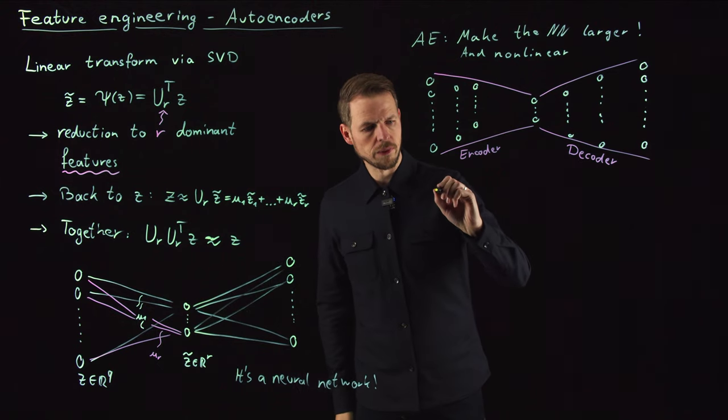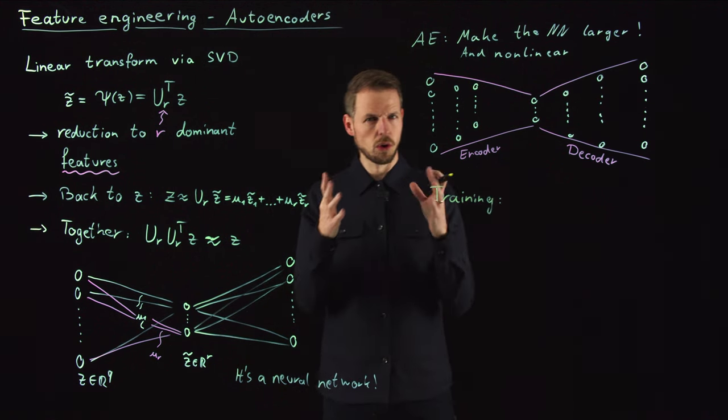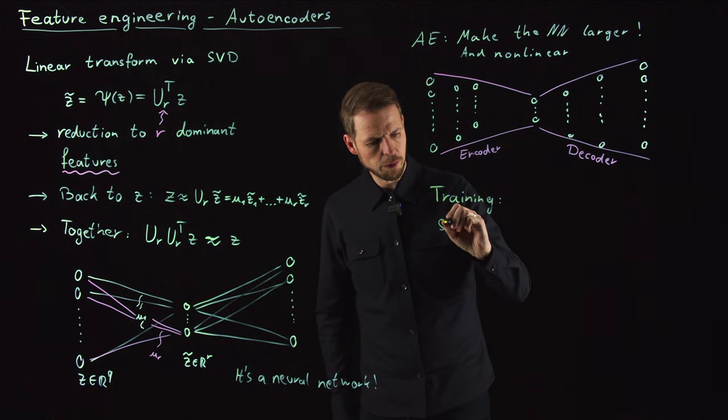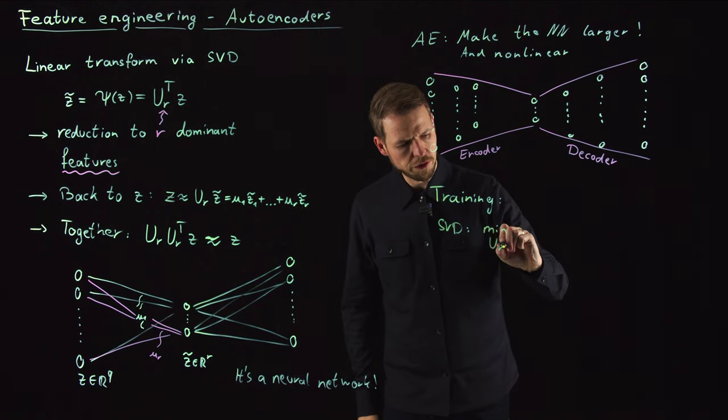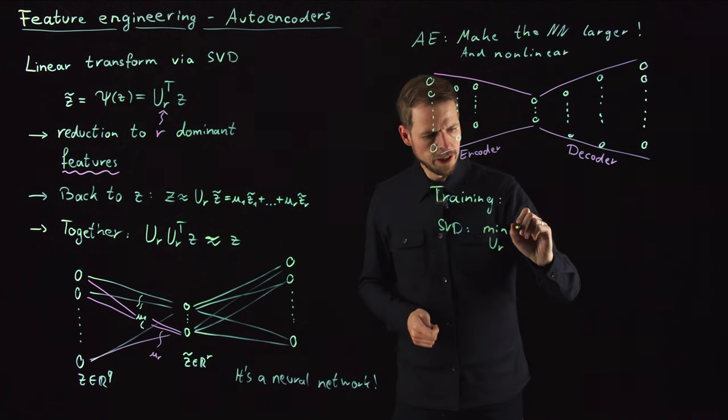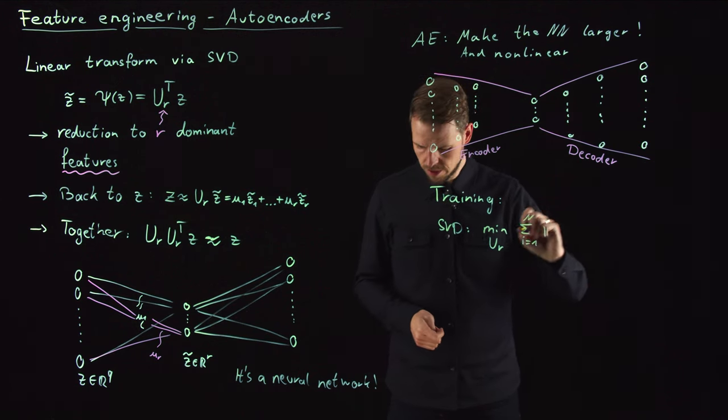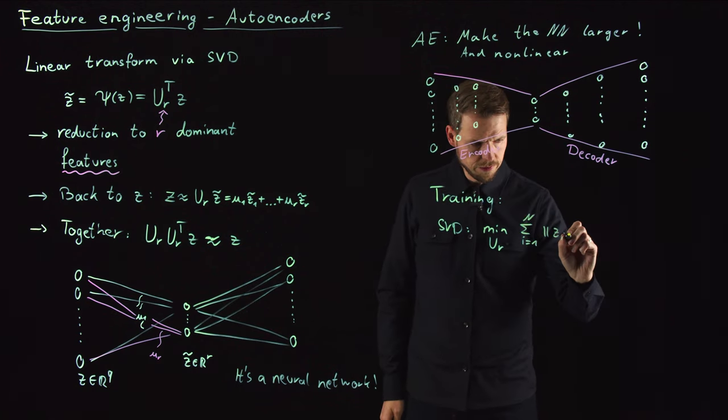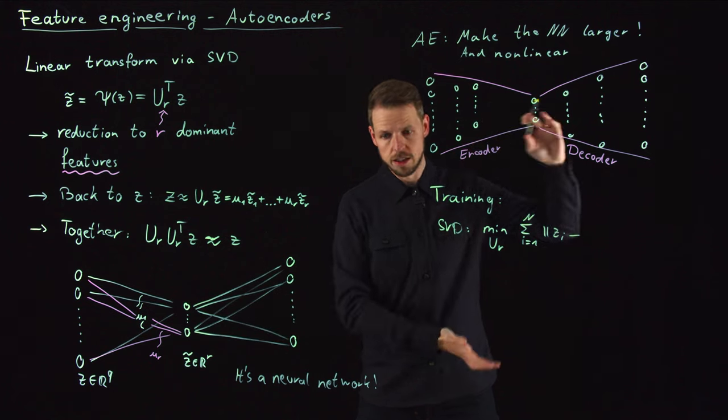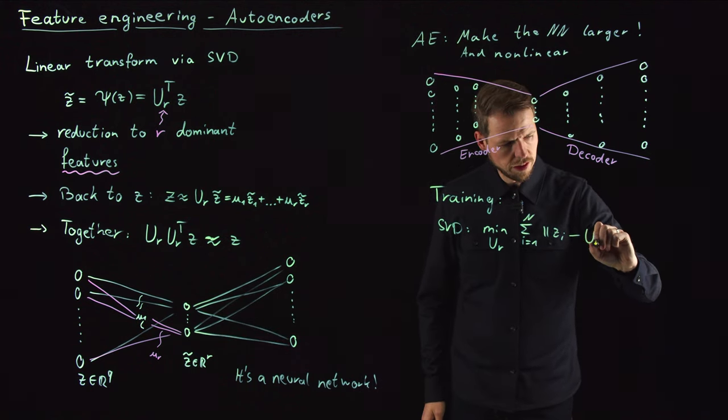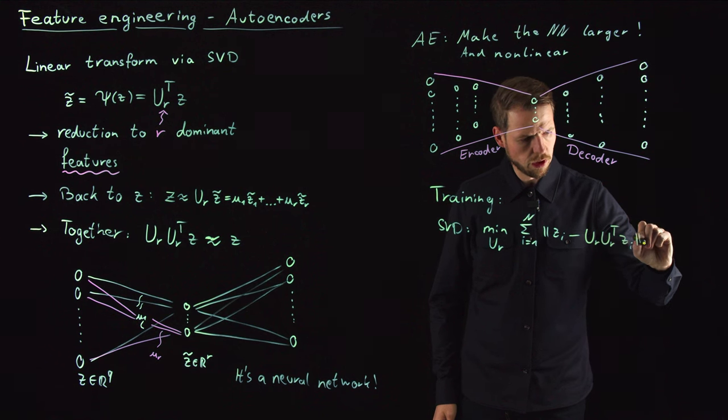For the training, there's again a close relation. In the SVD problem, this was a closed form solution, but we also formalized this as an optimization problem. We said minimize over the set of R vectors or matrix with R columns and do the following: go over all your samples and minimize the distance between each sample and the encoder-decoder sequence,